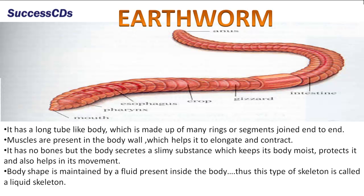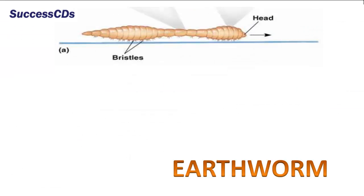Body shape is maintained by a fluid present inside the body. Thus, this type of skeleton is also called a liquid skeleton. While moving, an earthworm extends muscles of its segments which move ahead and grip the ground. Then the segments following it contract and pull the rest of the body ahead.